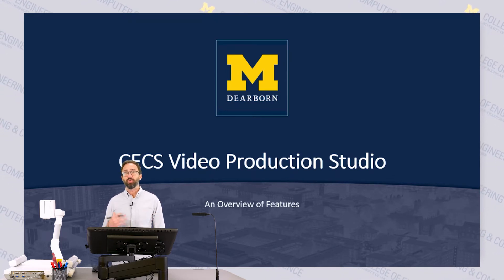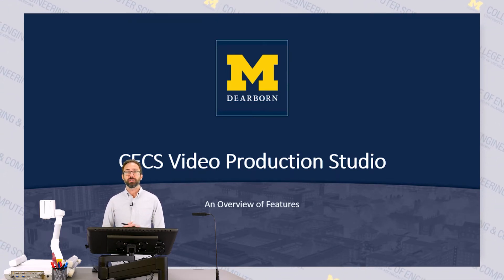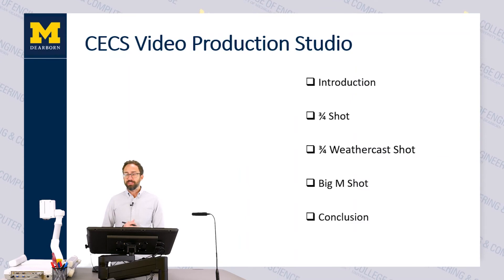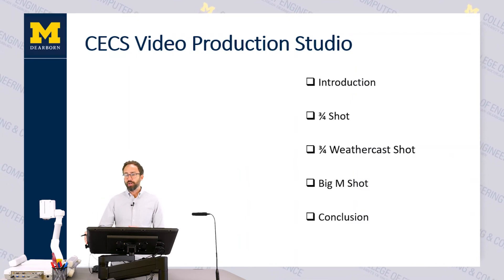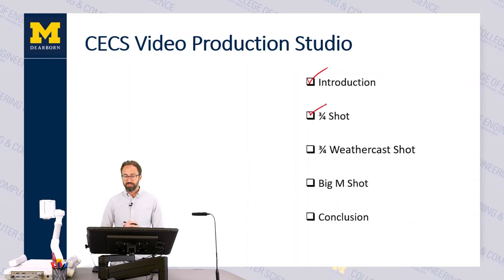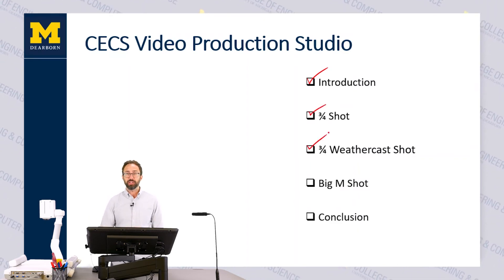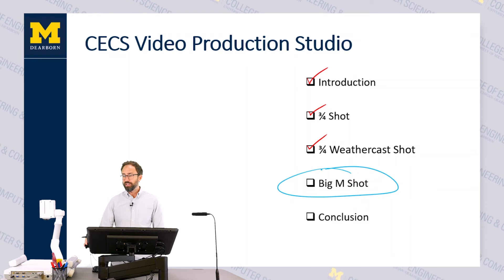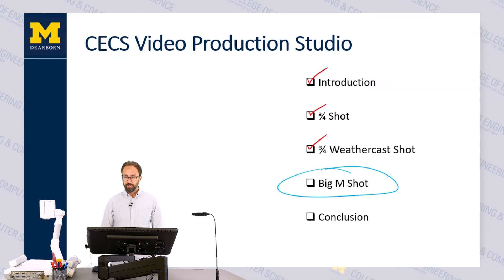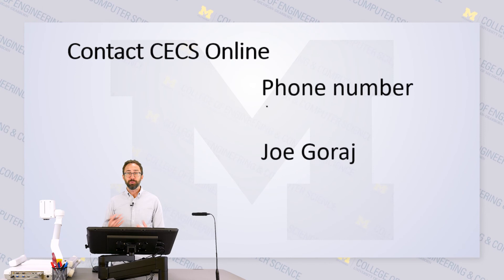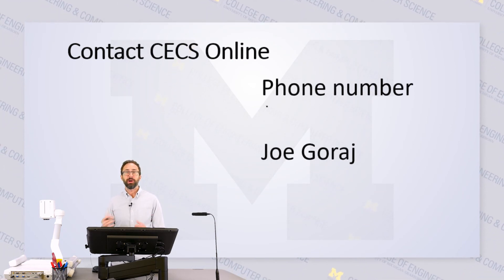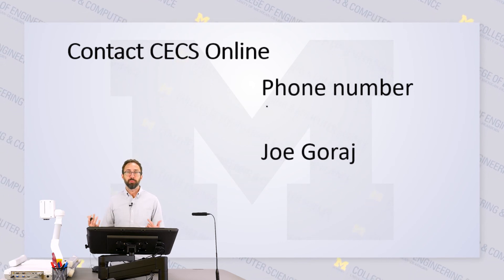I'd like to give a quick example of what a PowerPoint presentation might look like and how the pen will work a little differently than you might be used to. As I skip forward in the slides, I can check off what I've already covered during this presentation. We've talked about the introduction, the three-quarter shot, the weathercast shot, and we're currently talking about this shot with the big M behind me. You can see that coming up we have the conclusion. As I move forward, I can use the digital pen to write out and fill in areas of my PowerPoint slide that normally would be filled in just with computer text.